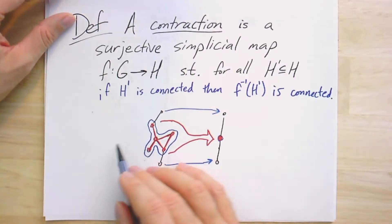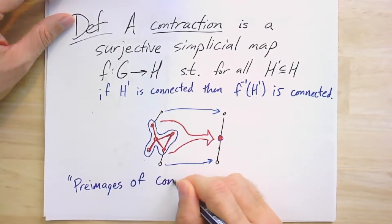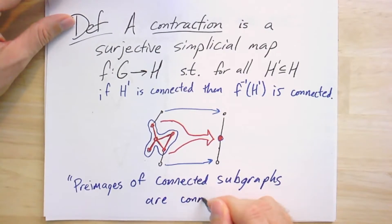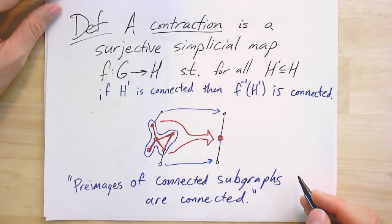From this description, you might now see a relationship to our definition of continuity. Because you'll see that preimages of connected subgraphs are connected. Just like with continuous functions, we said preimages of open sets are open. Well, here we're going to say preimages of connected subgraphs are connected. We're going to call that a contraction.